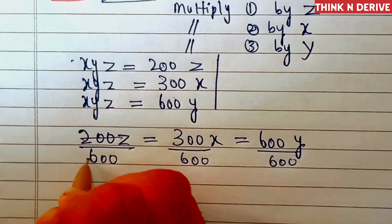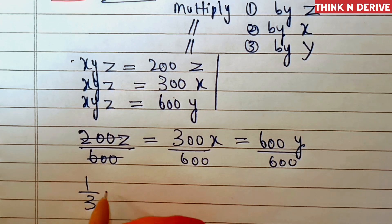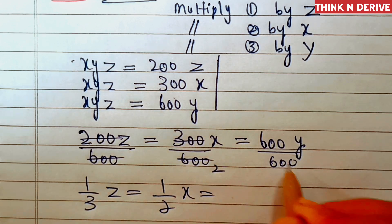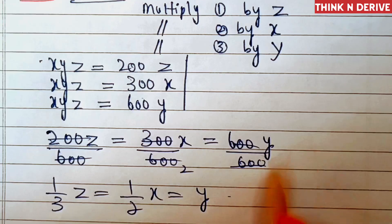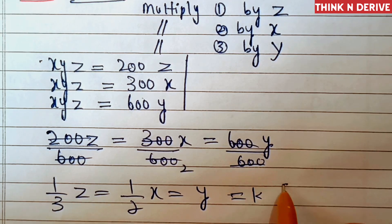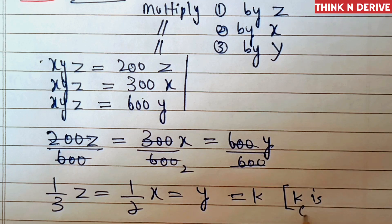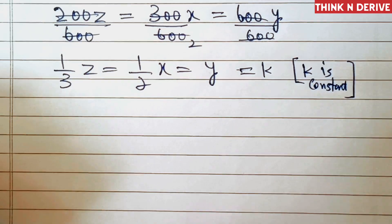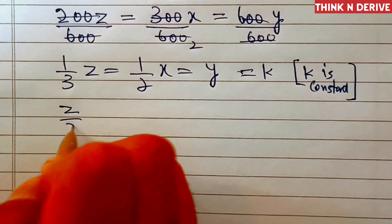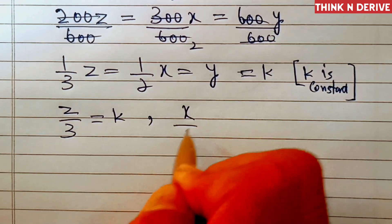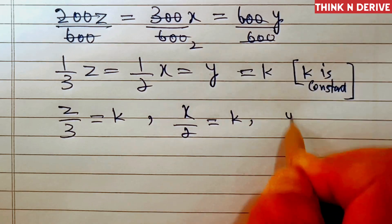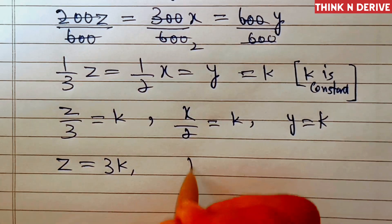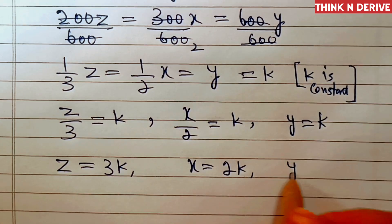So this gives us z divided by 3 equal to x divided by 2 equal to y, and we set each equal to k, where k is some constant. This implies z by 3 equal to k, x by 2 equal to k, and y equal to k. That means z is equal to 3k, x is equal to 2k, and y is equal to k.